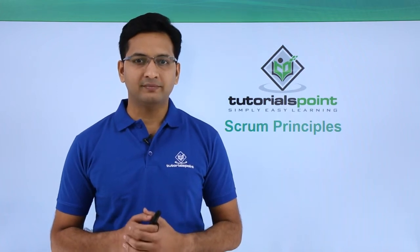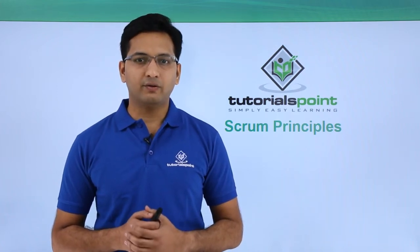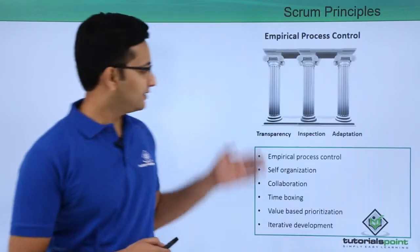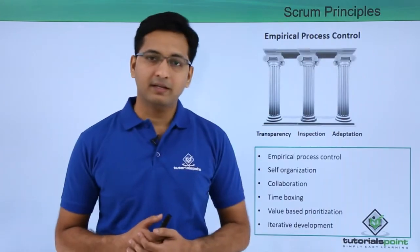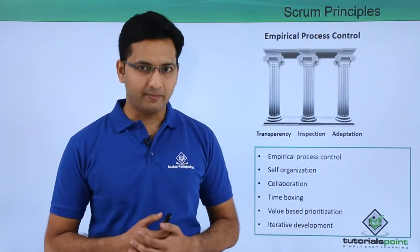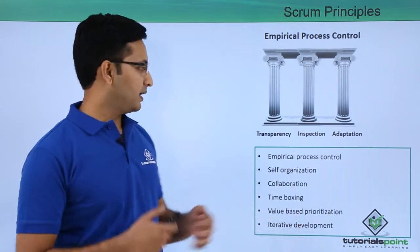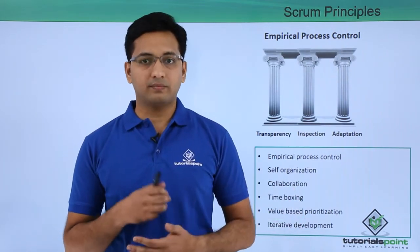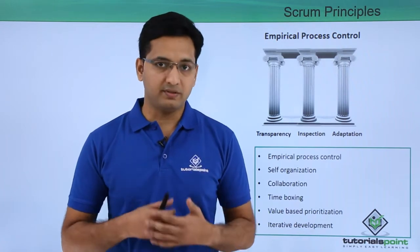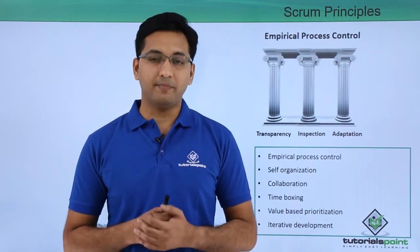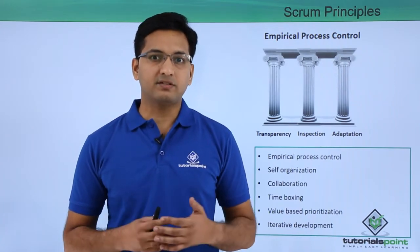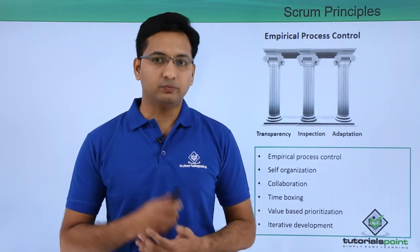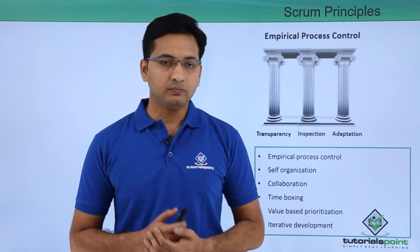Welcome to Tutorials Point. In this video we are going to take a look at the Scrum principles. These are the six Scrum principles. Let us go through them one by one. The first one is empirical process control. Scrum is founded on the function of empiricism. Empiricism asserts that knowledge comes from experience and making decisions based on what is known.